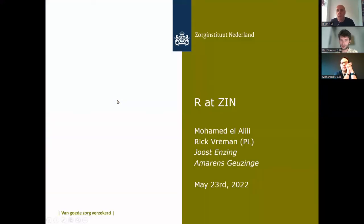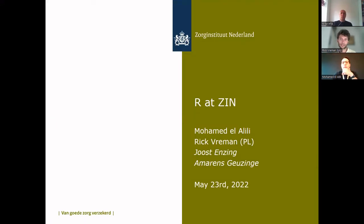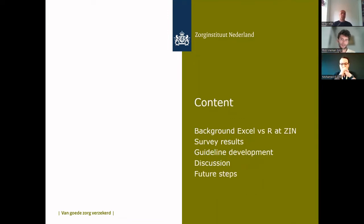Let's get started. We'll talk about our project at the National Healthcare Institute in the Netherlands, or ZIN. Our project is about the implementation of R at our institution. We have four project members — Mohammed and myself are here today; two others, Joosje and Amaranth, are not here but are part of our project group. We want to discuss briefly some background on the use of R within ZIN, how we view R versus Excel, then Mohammed will present results from a survey distributed in the Netherlands, and we'll talk about a guideline for submissions in R that we are developing.